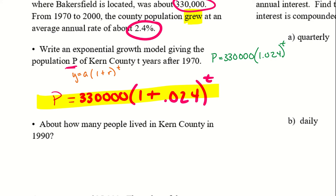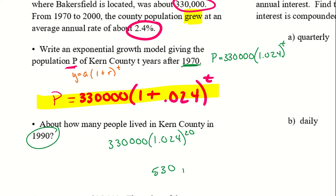The second question asks how many people lived in Kern County in 1990. Remember, we started at 1970, so from 1970 to 1990 is 20 years. So I'm going to take 330,000 times 1.024 to the power of 20, because that is 20 years. Plug it into the calculator and we'll get 530,289. Since we are talking about population, we don't want any decimals because we can't have half a person, so we just have a whole number.